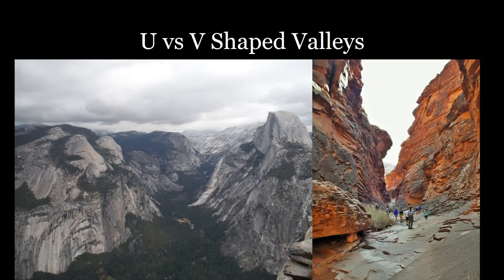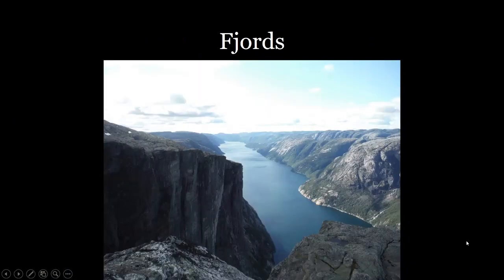One of the most notable of these features are U-shaped valleys. Glaciers carve out and erode a lot of sediment, and as a result they can produce these very wide, steep-walled valleys — like you see in Yosemite Valley — compared to the very steep, narrow V-shaped valleys that form in river channels. So glaciers form U-shaped channels; rivers form V-shaped channels.